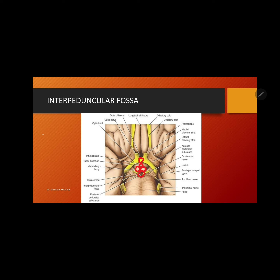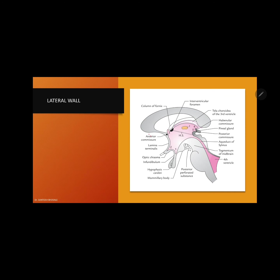You can remember the contents of the interpeduncular fossa using the mnemonic 'eye stomp': I for infundibulum, S for subthalamus, T for tuber cinereum, O for optic chiasma, M for mammillary bodies, and P for posterior perforated substance.